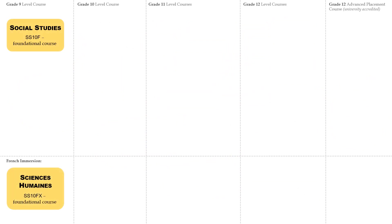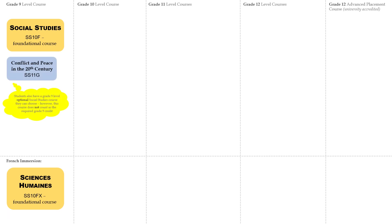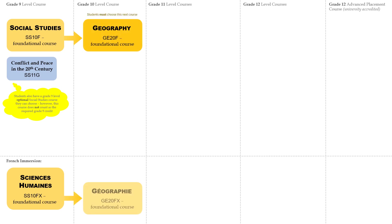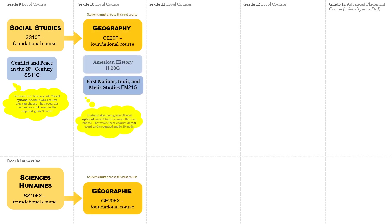Social Studies is a core subject for graduation that starts in Grade 9. Students also have a Grade 9 level optional social studies course they can choose; however, this course does not count as the required Grade 9 credit. Then a mandatory course in Grade 10. Students also have Grade 10 level optional social studies courses; however, these courses do not count as the required Grade 10 credit.